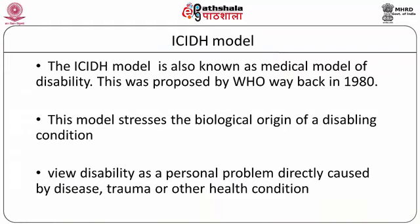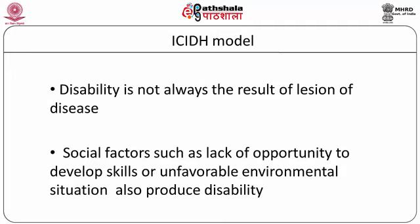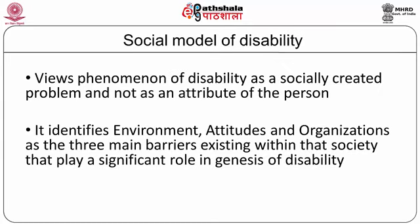The medical model stresses the biological origin of a disabling condition and views disability as a personal problem directly caused by disease, trauma or other health conditions. However, disability is not always the result of lesion or disease. Social factors such as lack of opportunity to develop skills or unfavourable environmental situations also produce disability. The social model of disability views disability as a socially created problem and not as an attribute of the person. It identifies three barriers — environment, attitude and organizations — that make a person with impairment handicapped and disabled.